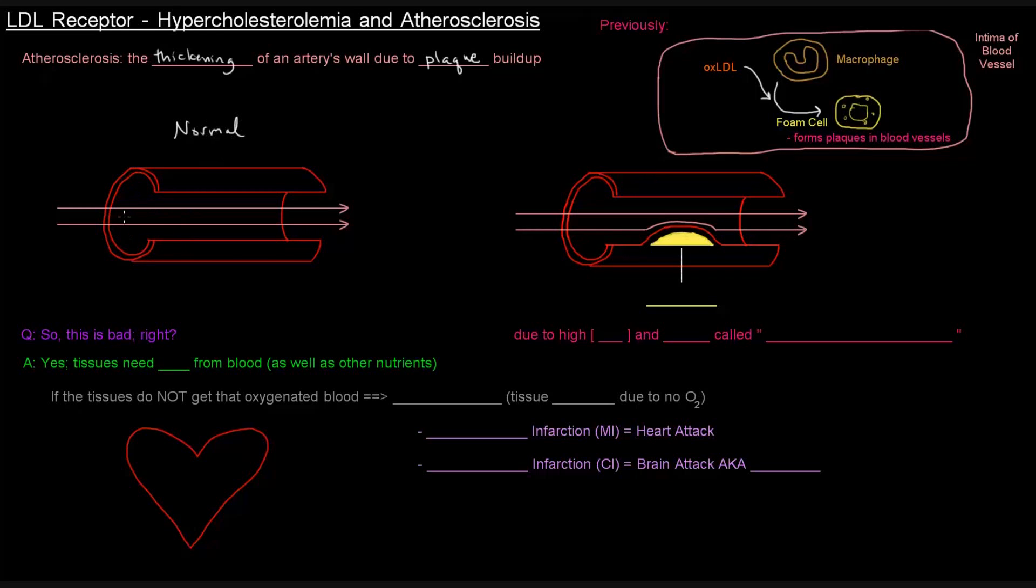So normally an artery looks like this. We've got this little tube basically that blood can flow right through and eventually get to tissues that line the capillaries. Blood carries oxygen and a bunch of nutrients to these tissues. This is what normally happens.